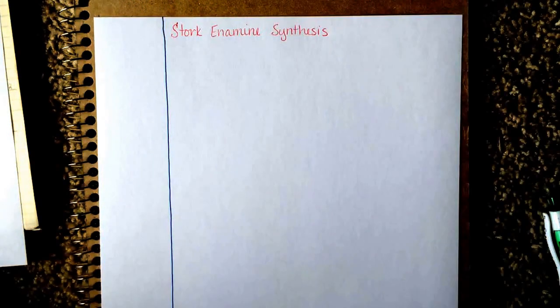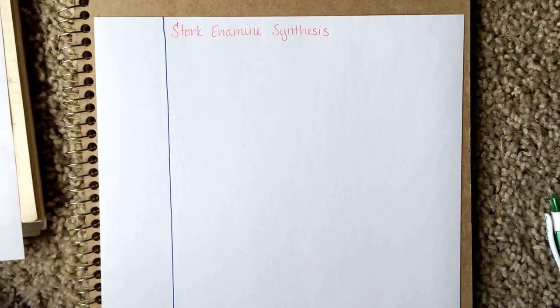The next reaction that we're going to look at is called the Stork-Enamine Synthesis, and it is a conjugate addition reaction. It is really just a derivative of the Michael Addition reaction. It's not anything completely unique.